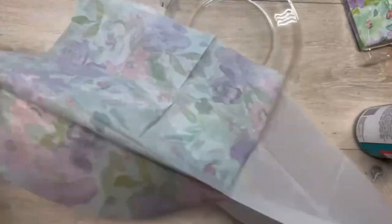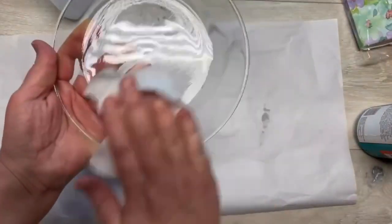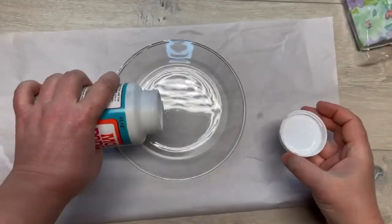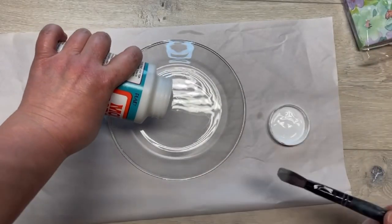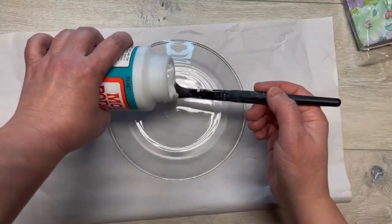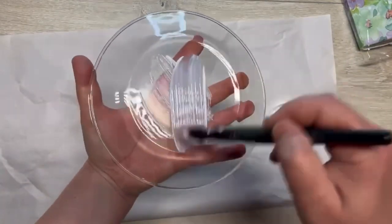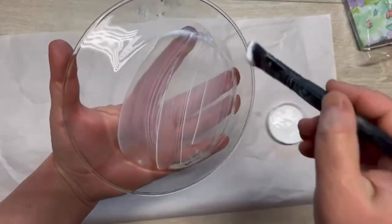All right, then we're going to take the clear plate from Dollar Tree and I'm just wiping the back with some rubbing alcohol and let it dry. And then I have some dishwasher safe Mod Podge. It has to be dishwasher safe and I'm just covering the back of the plate with the dishwasher safe Mod Podge.